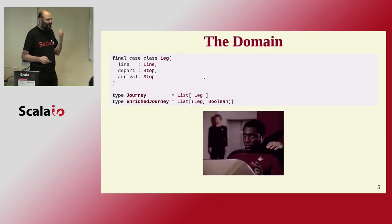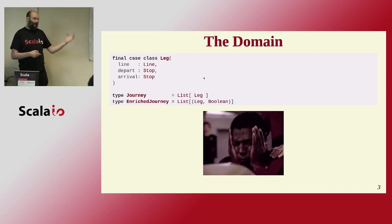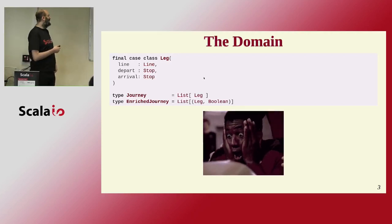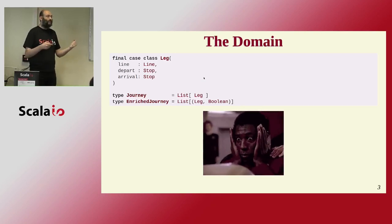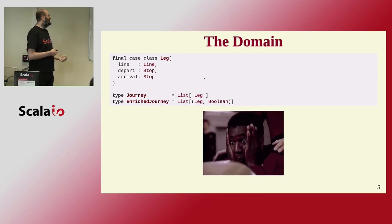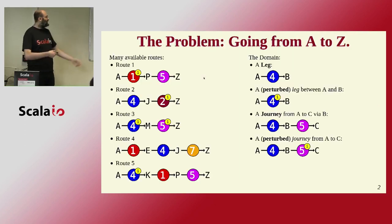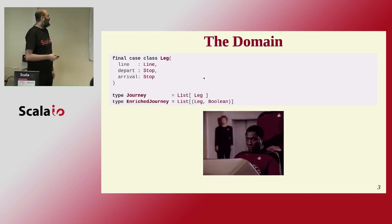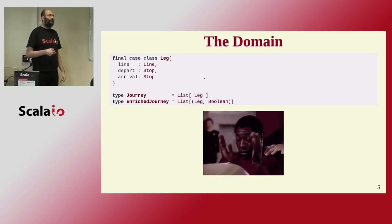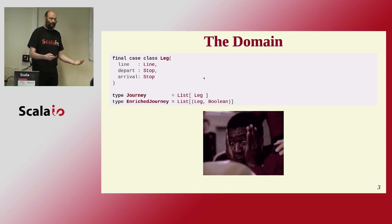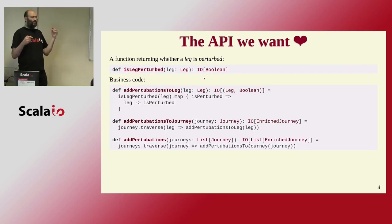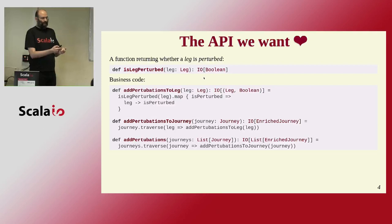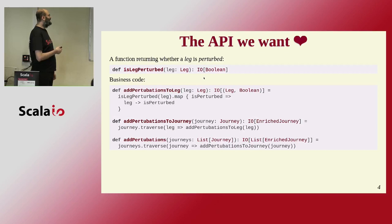So, the domain. A leg is a line, your departure, and your arrival — you don't generally take all the line. A journey is a list of legs. And I just want to add a boolean saying whether it is perturbed or not. So what is the API we want? We have some legs, and what we want is basically a function: is this leg perturbed?